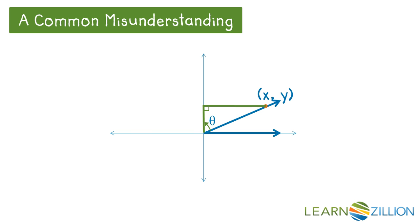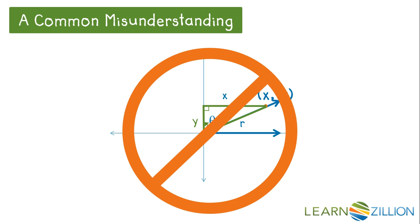Some students think that it doesn't matter if you draw the reference triangle to the x axis or the y axis, and will draw it as shown. This is incorrect, because the angle theta is not in standard position. Drawing it incorrectly may switch the sine and the cosine. Don't do it.